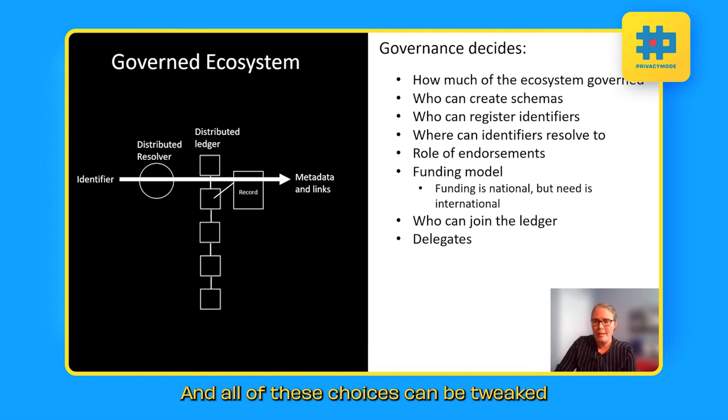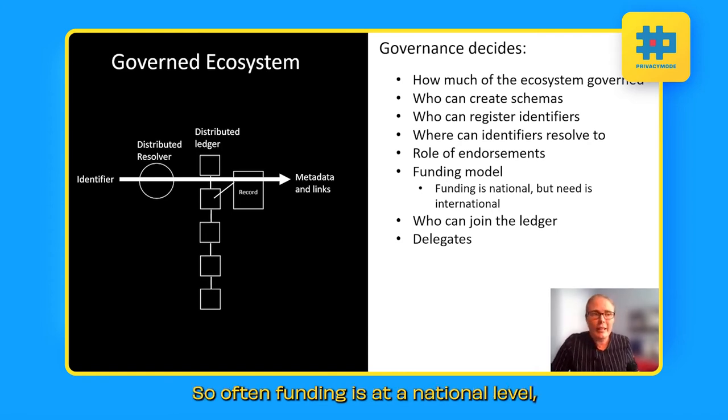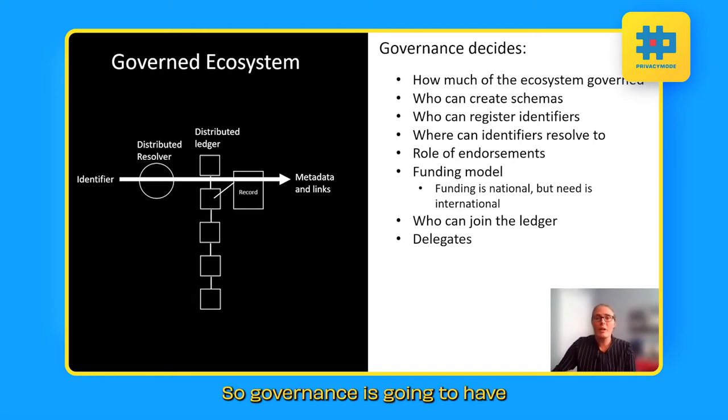Perhaps the ecosystem might want to limit where the identifiers can resolve to or the role of endorsements. And all of these choices can be tweaked because one of the key points is the funding model. So often funding is at a national level, but the need for a global system of resolvable identifiers is an international one. So governance is going to have all kinds of choices to be made about who can join, delegation, et cetera. And this is ultimately going to dictate the functionality of the distributed identifier ecosystem.